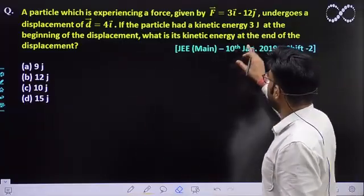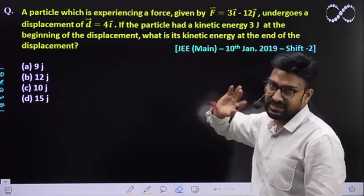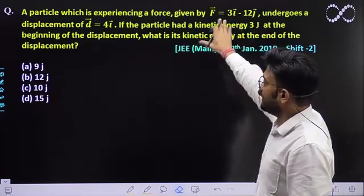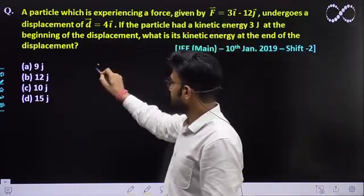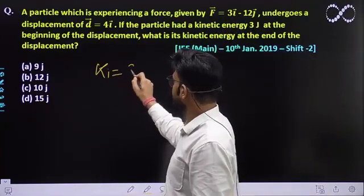If the particle has a kinetic energy of 3 joules at the beginning, it means that you have a force on body and its displacement is given. Initial kinetic energy was 3 joules.